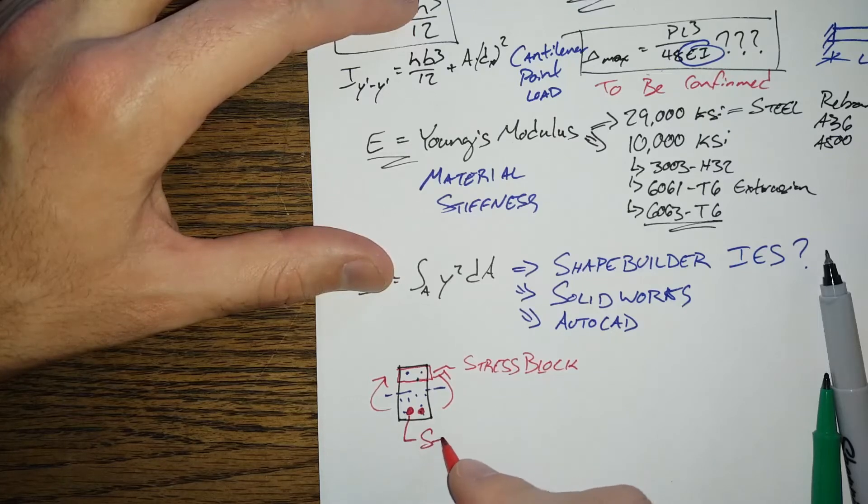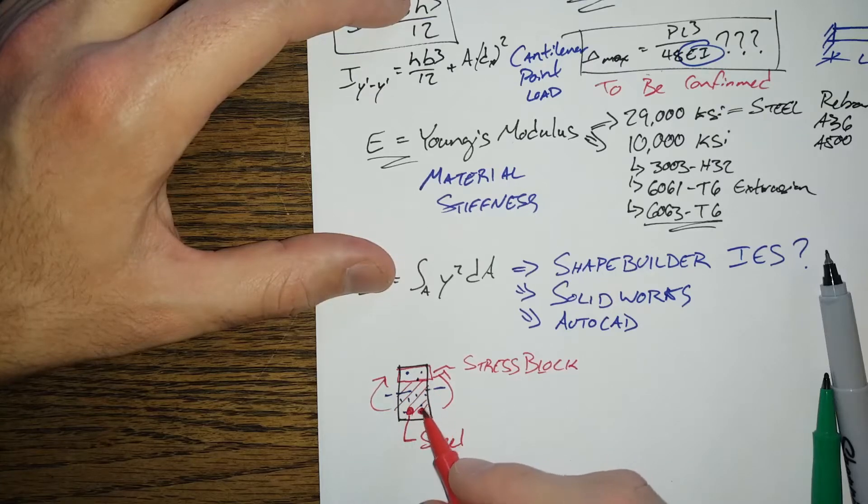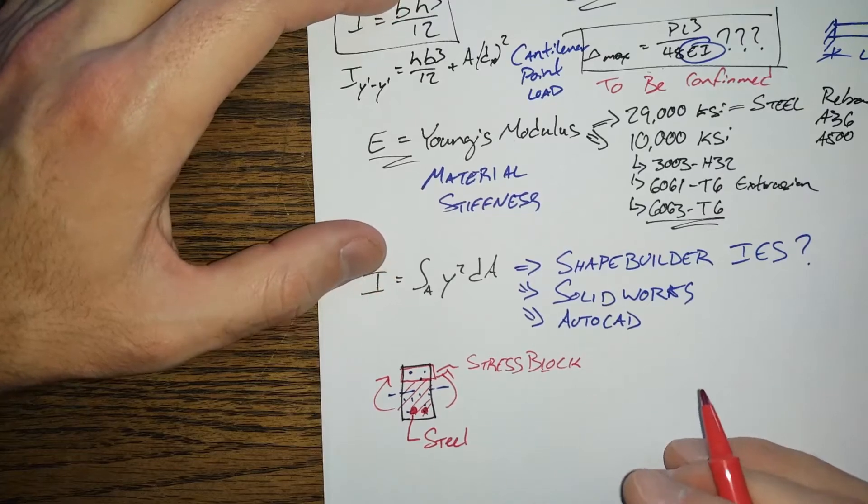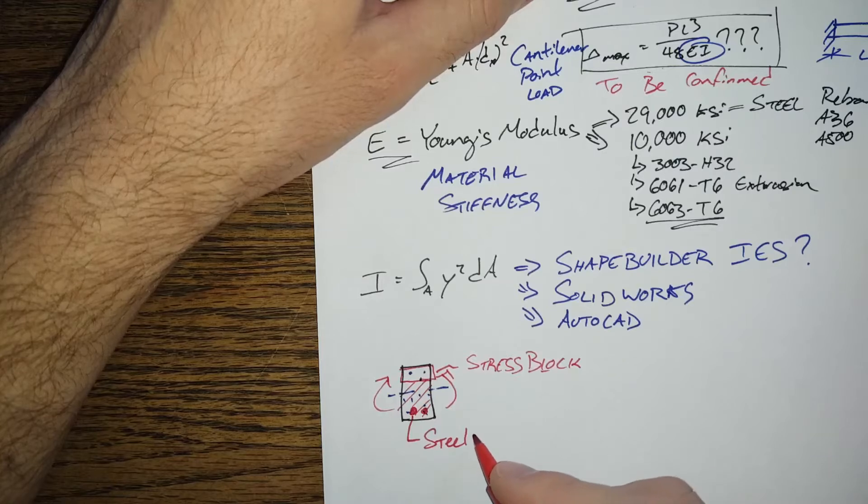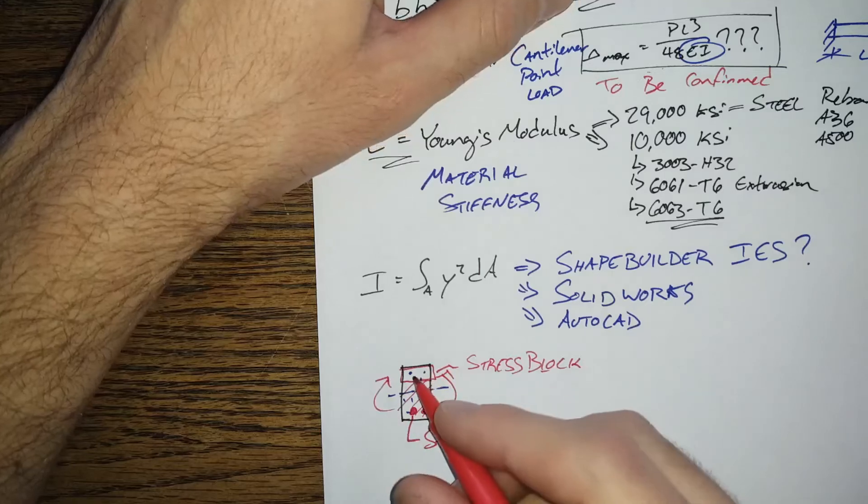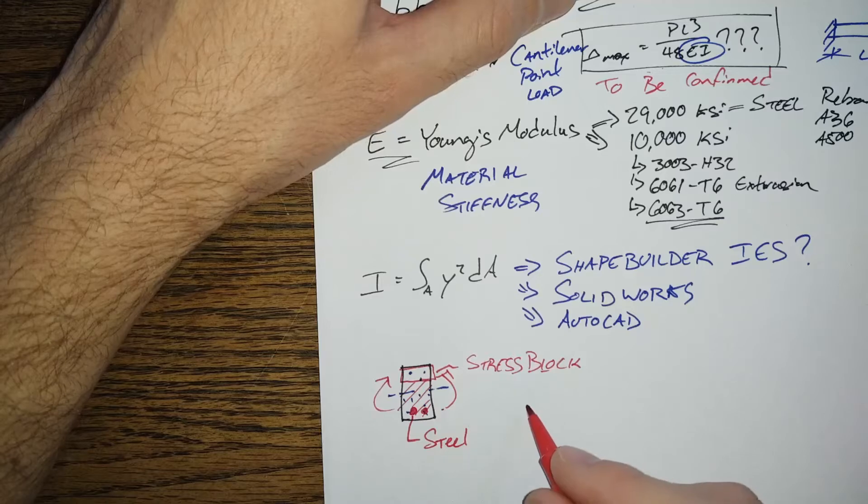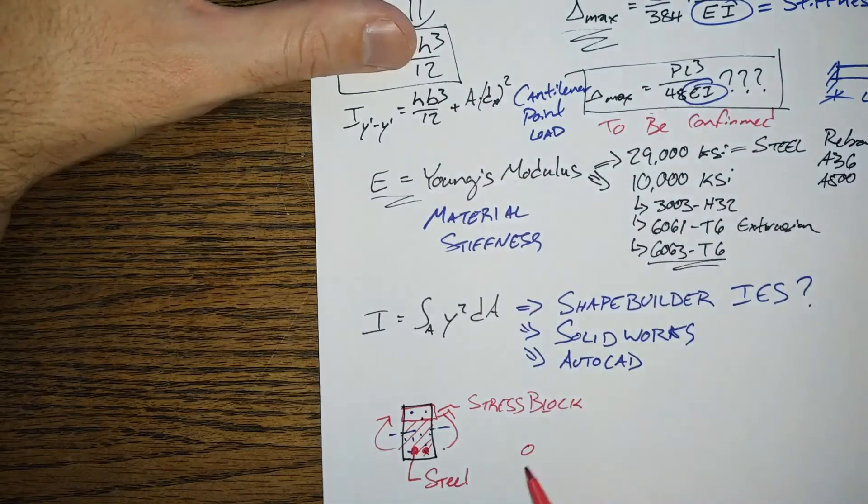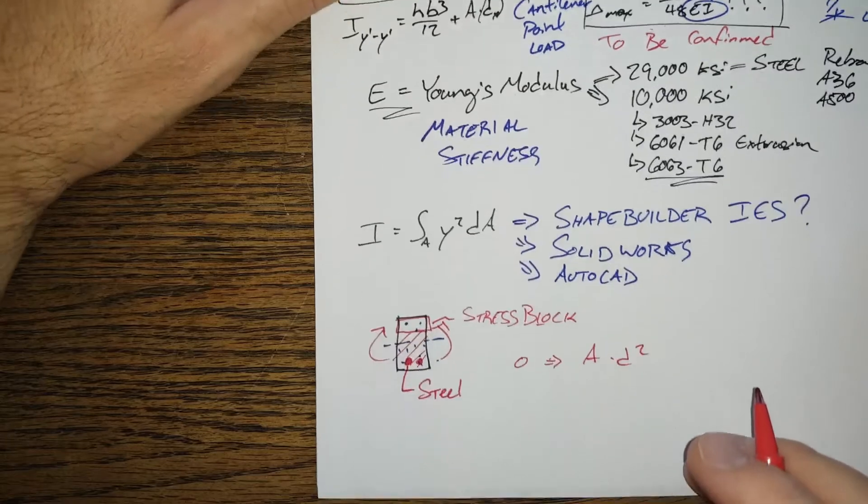And then we've got the steel down here. We totally ignore all of this concrete that's in tension because concrete tension bad, it's got a minuscule cracking load. It's basically there just to get the load down to the steel, and then this steel is giving us the tension resistance. And when we're working on the stiffness of this beam, we totally ignore whatever the circle equivalent of this bh cubed term is, and we pretty much just do A times d squared for that one.